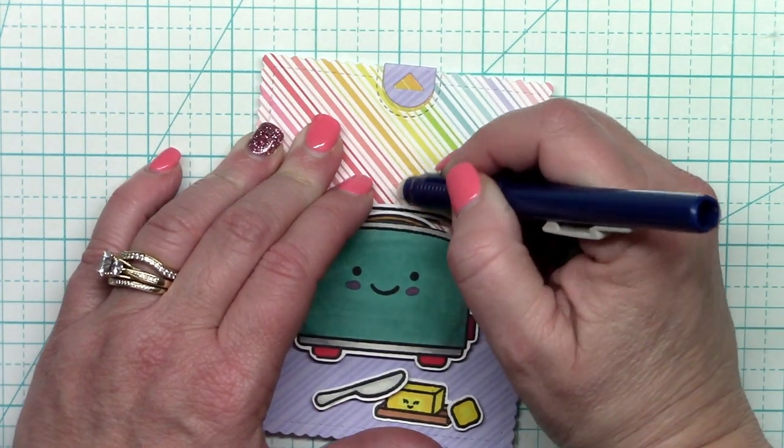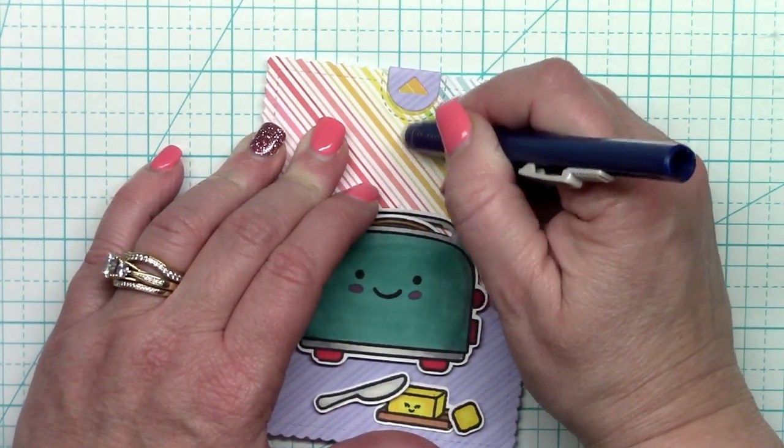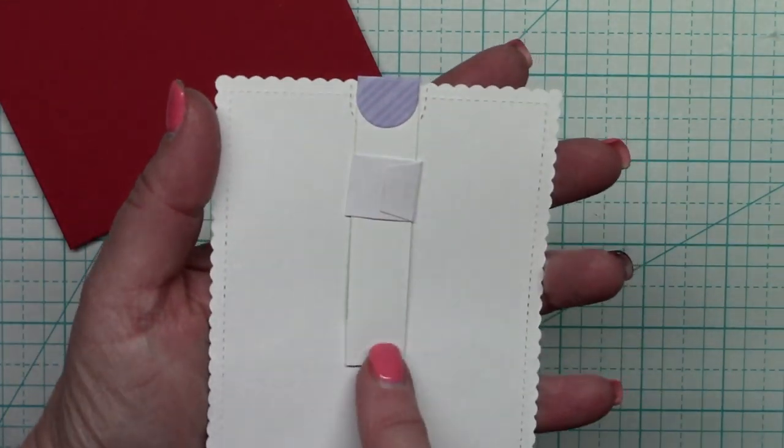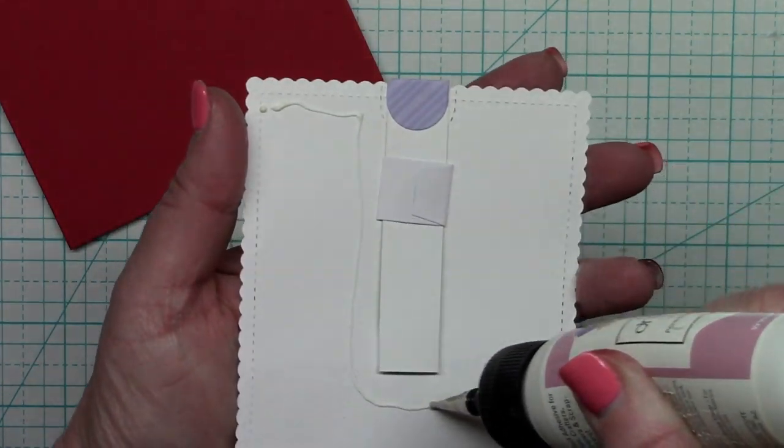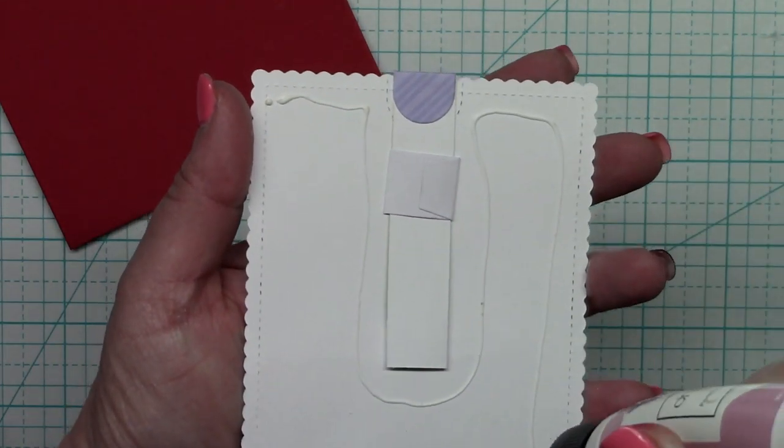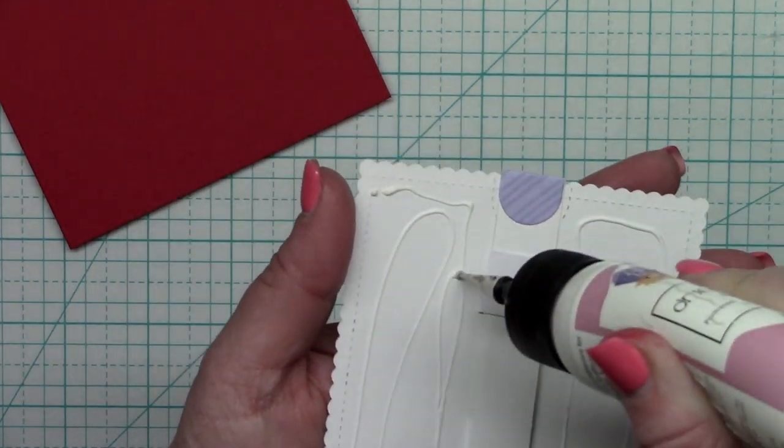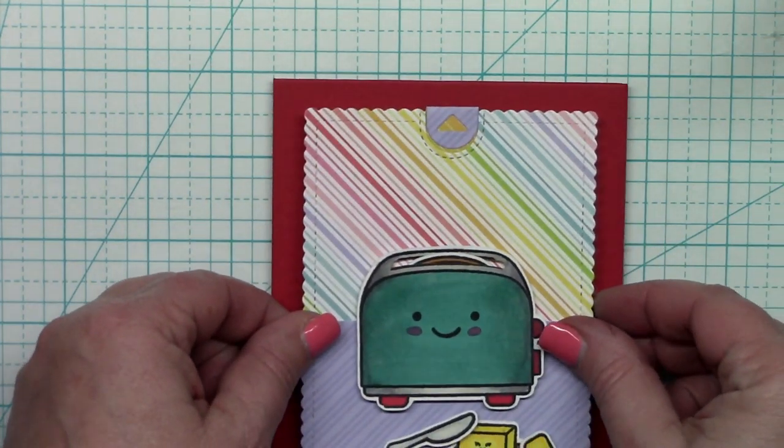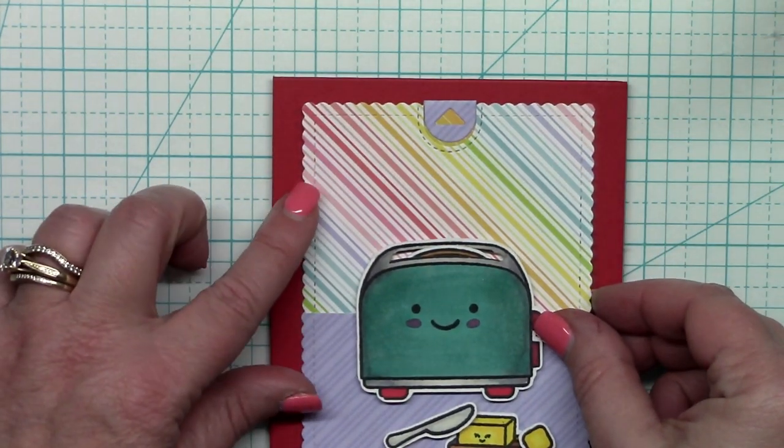So it's time now to erase the pencil line I put in earlier. Obviously we don't want that to show anymore. And it's time to also go ahead and glue this onto the card base itself. Now you just need to be careful not to put any glue where that pull tab mechanism is. But I did want to show that you don't have to put this on foam tape to make it work.